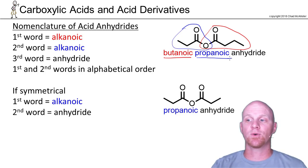It's not by chain length, it's by alphabetical order. So in this case we'll say butanoic first, propanoic second, and then you always just finish it off with the word anhydride. This is butanoic propanoic anhydride.